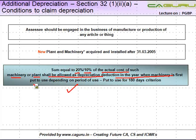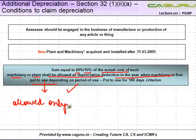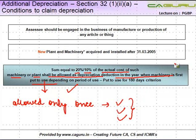Please note that this additional depreciation is allowed only once. You cannot claim it every year. It has to be allowed only in the year when the asset is first put to use. And when the asset is put to use for less than 180 days, the additional depreciation rate is 10%.